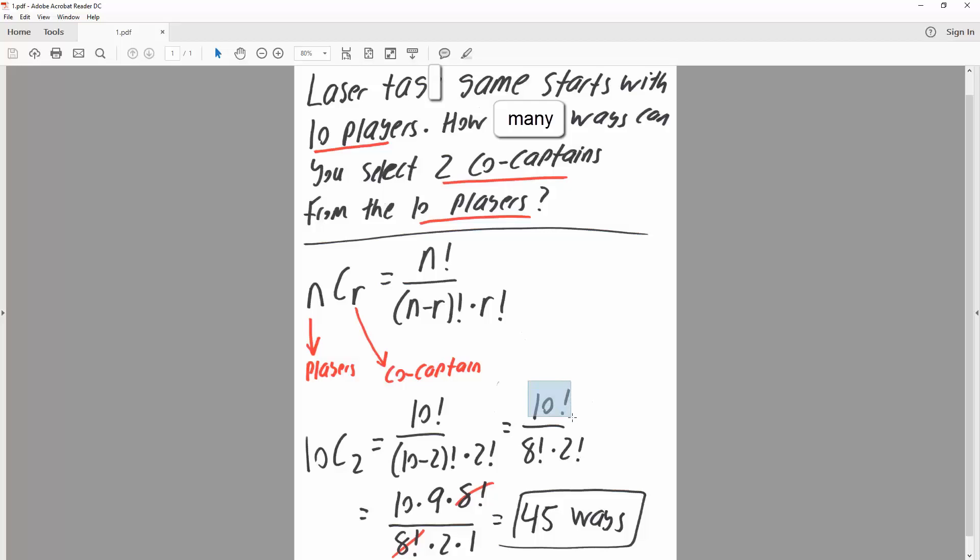So instead of saying 10 factorial, we could say 10 times 9 times 8 factorial. And we have 8 factorial here, so cancel, cancel. So we have 10 times 9 divided by 2, which is 45 possible combinations.